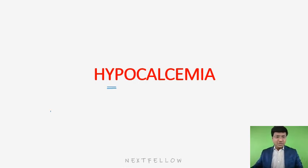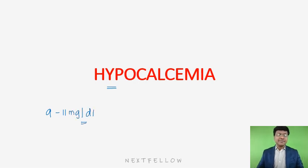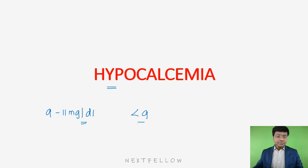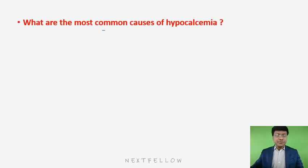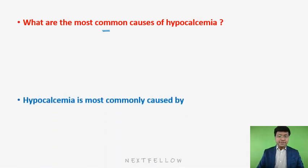The normal calcium levels are around 9 to 11 milligrams per deciliter. To call it hypocalcemia, the calcium level should be less than 9 milligrams per deciliter. First of all, you need to know what is the most common cause of hypocalcemia.